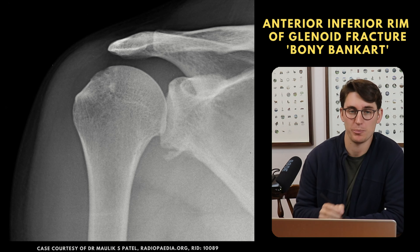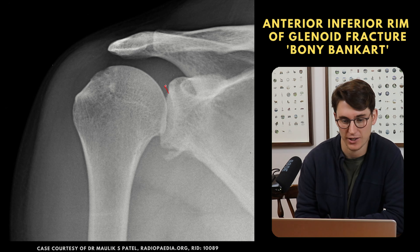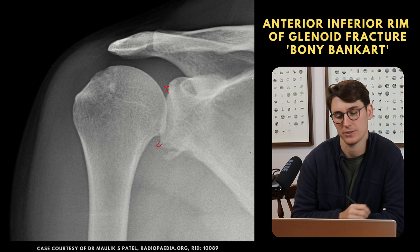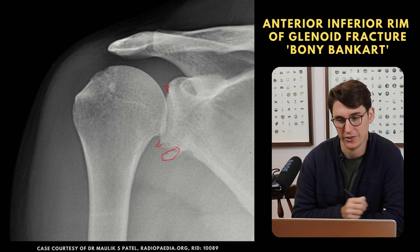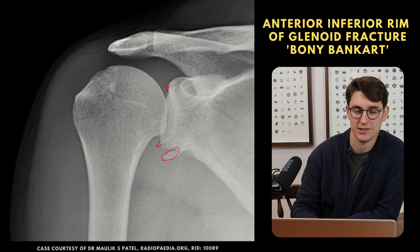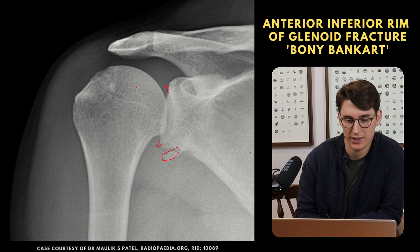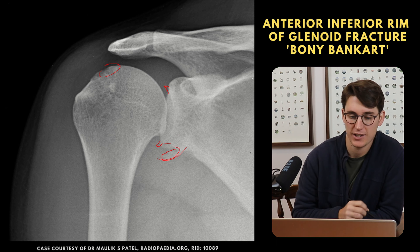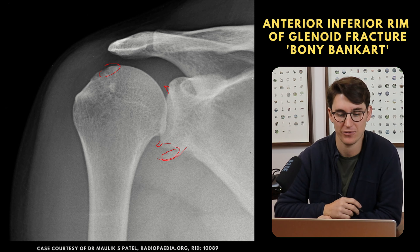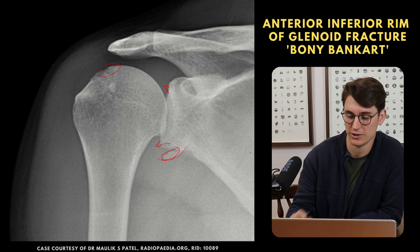Another common fracture is the bony Bankart lesion. A Bankart lesion technically refers to the cartilage and soft tissue lining the glenoid fossa. What we have here is a break of the anterior inferior rim of the glenoid. The shoulder has dislocated anteriorly and inferiorly, and the impact between the top of the humeral head and this anterior bony rim has caused a fracture — this is the bony Bankart, or anterior inferior rim of glenoid fracture, and it's an important area to look at in anterior shoulder dislocations.